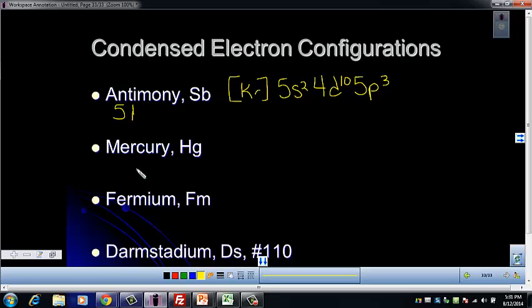The next example is mercury. Again, pause and look for it. Mercury is number 80, so it has 80 electrons. When you look, make sure you pick the previous noble gas. That's xenon.